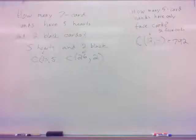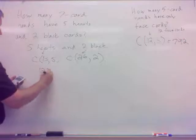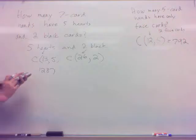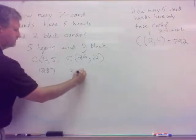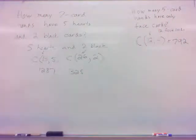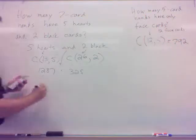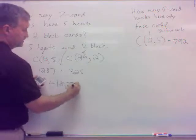So we're going to do combination 13, 5. That's 1287. Combination 26, 2. 325. Add those? No, don't add them. What do we do? Multiply because the word's and. And means multiply. 418,275.